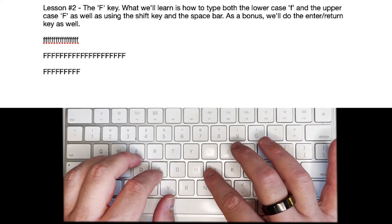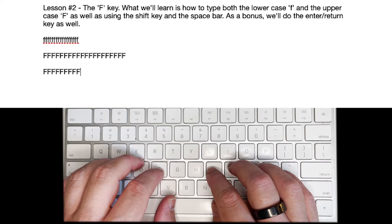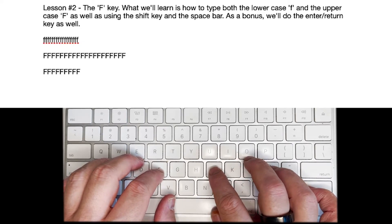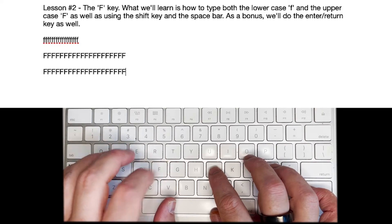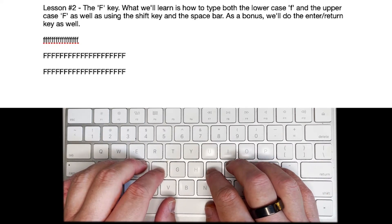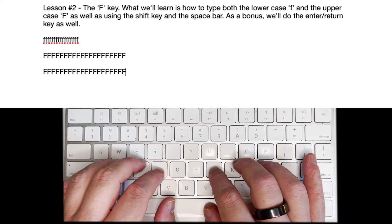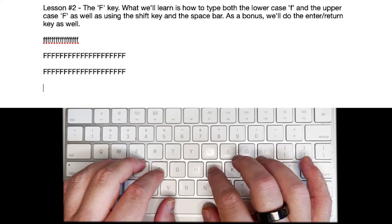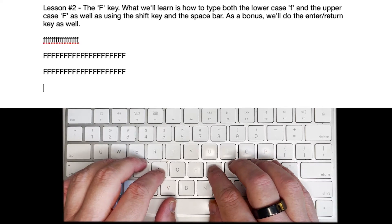Notice that no matter what I'm doing, my right index finger stays on J. So hold down shift again with your right pinky, tap F with your left index. Now let's return one more time — press return or enter twice with your right pinky. Now we're going to do: capital F, lowercase F, space, and keep repeating that pattern.